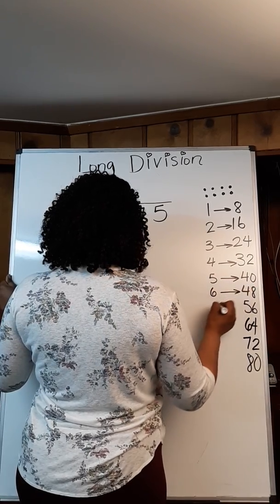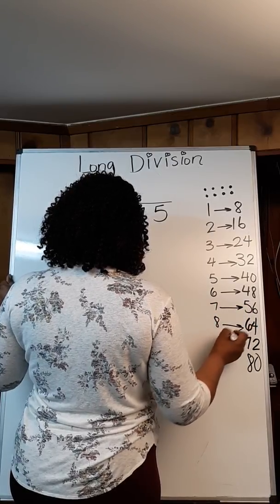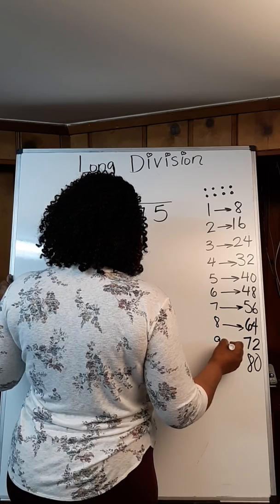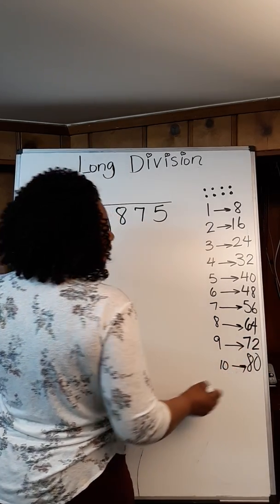Six represents 48. Seven represents 56. Eight represents 64. Nine represents 72. Ten represents 80.